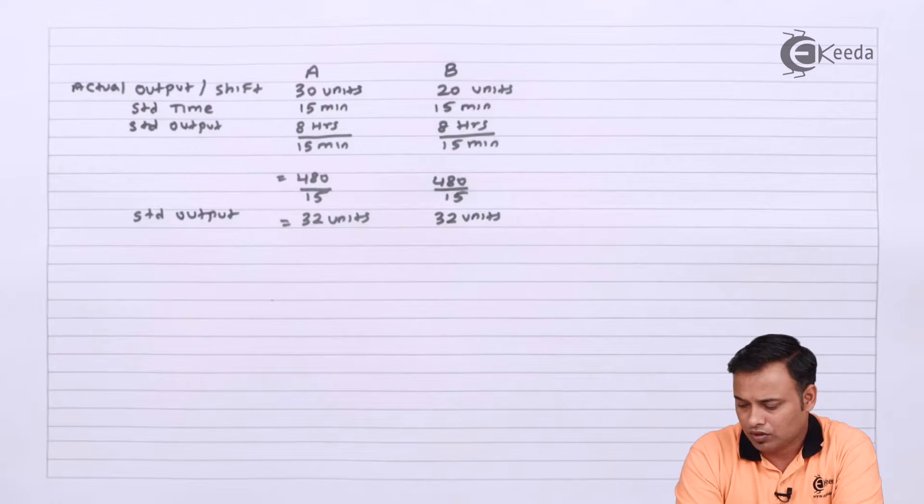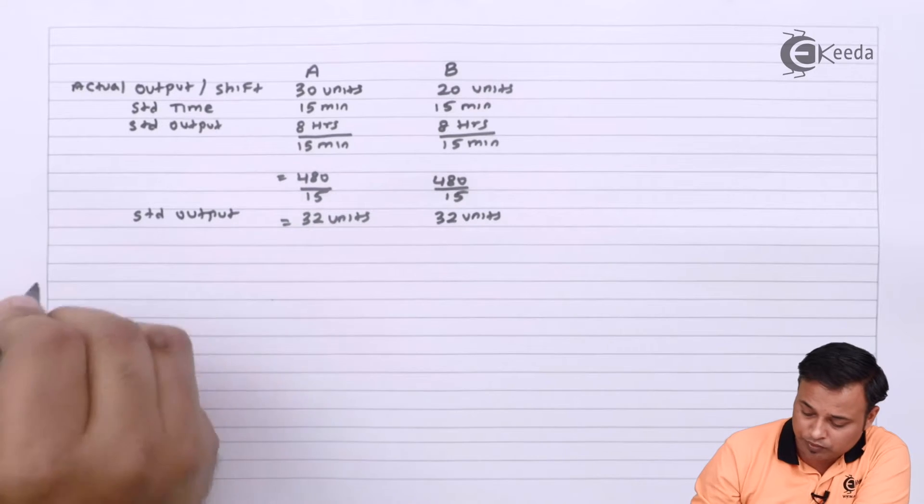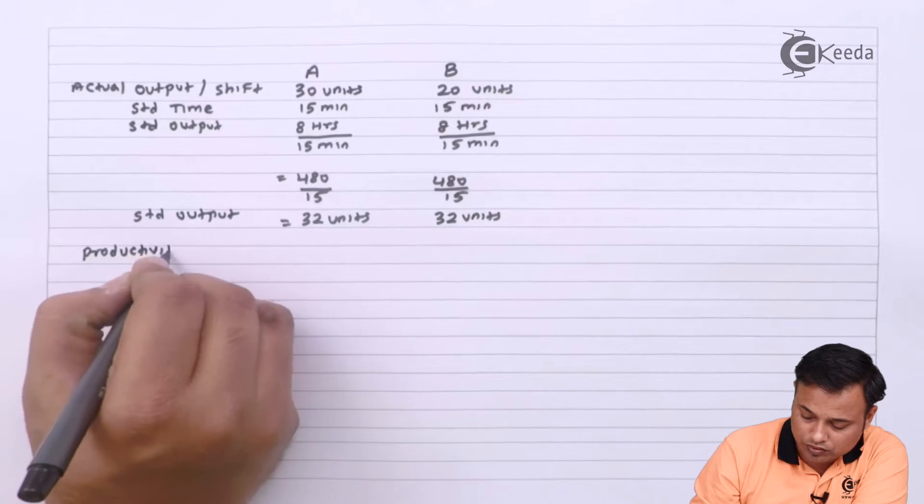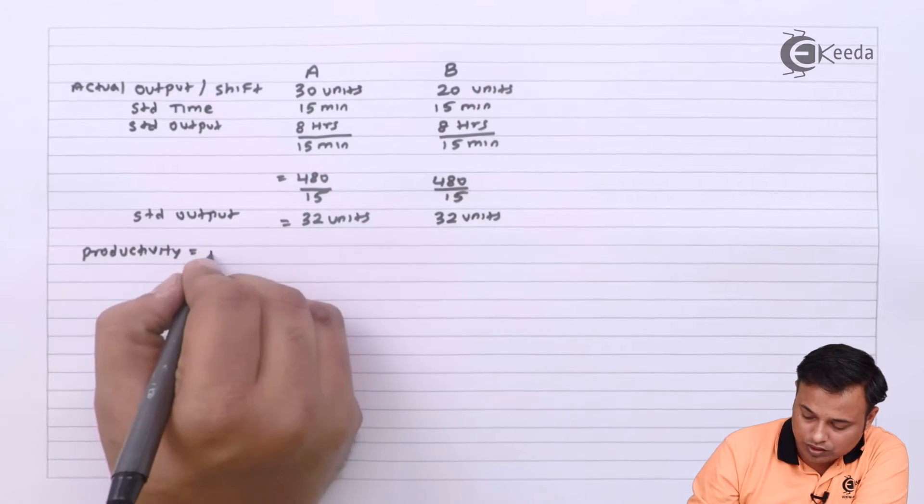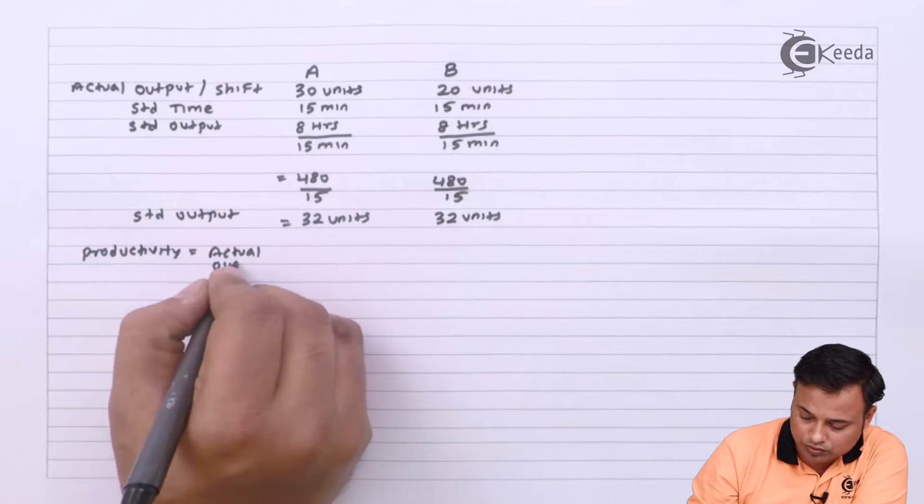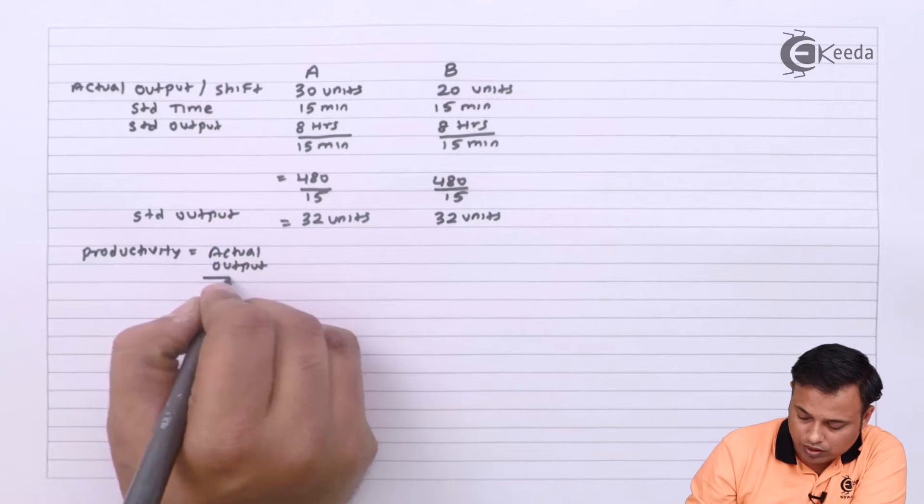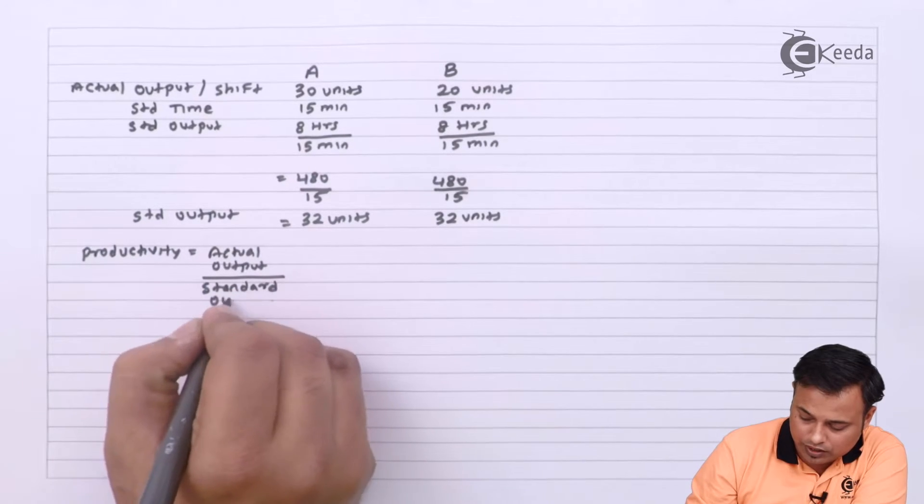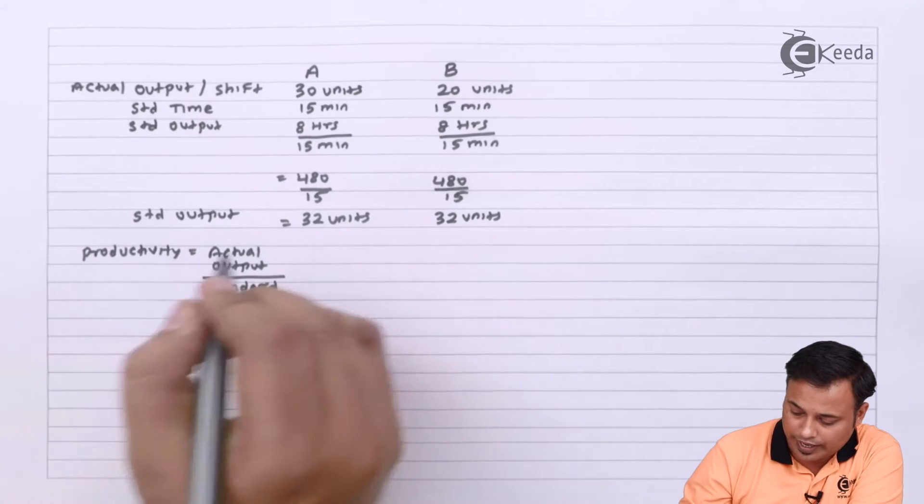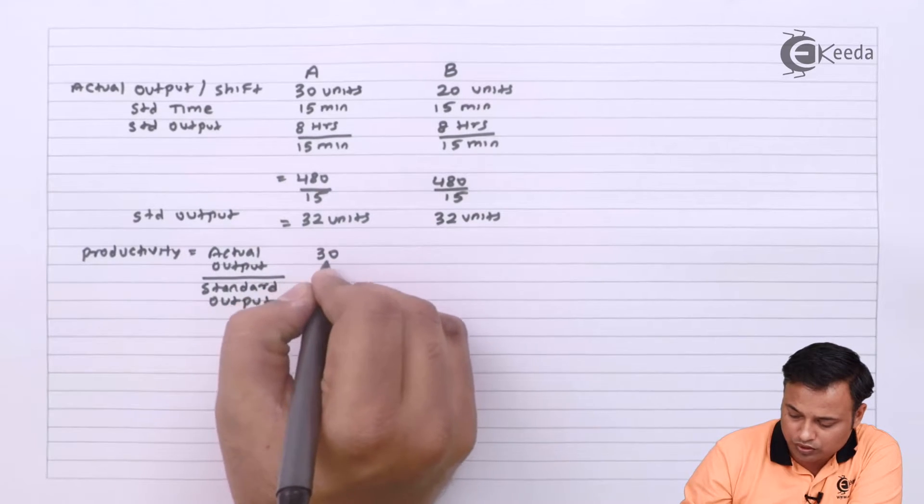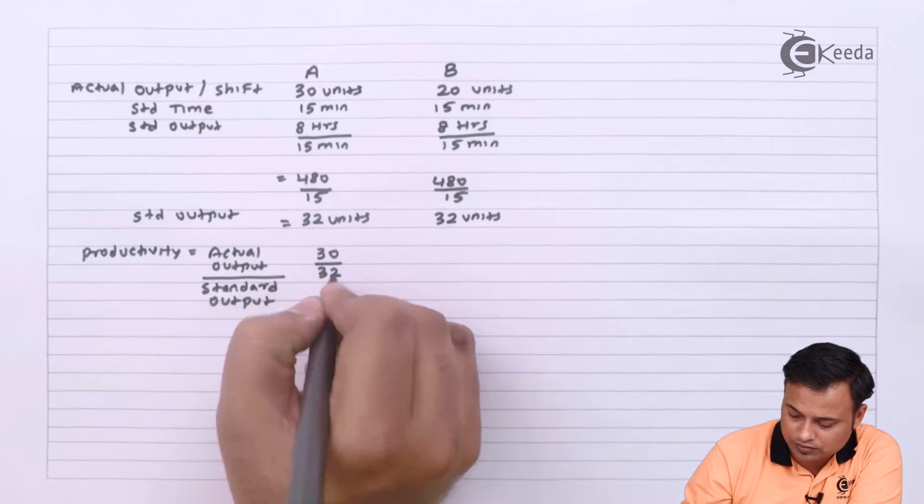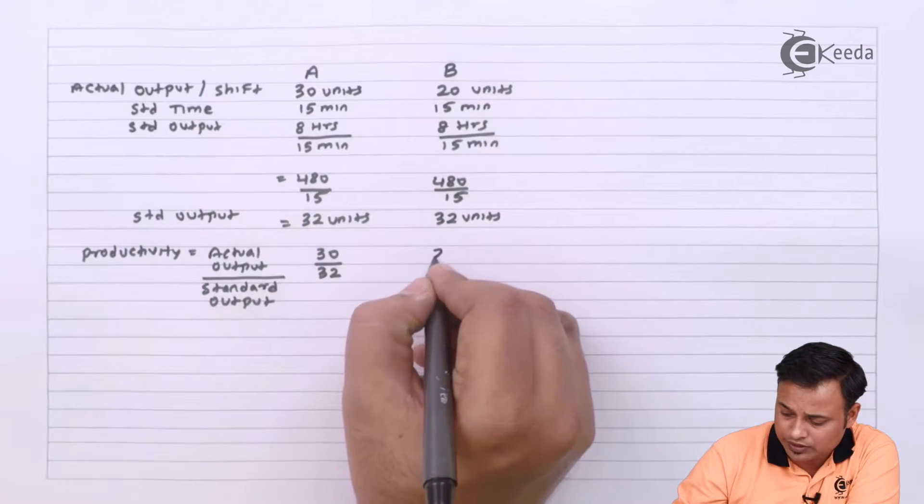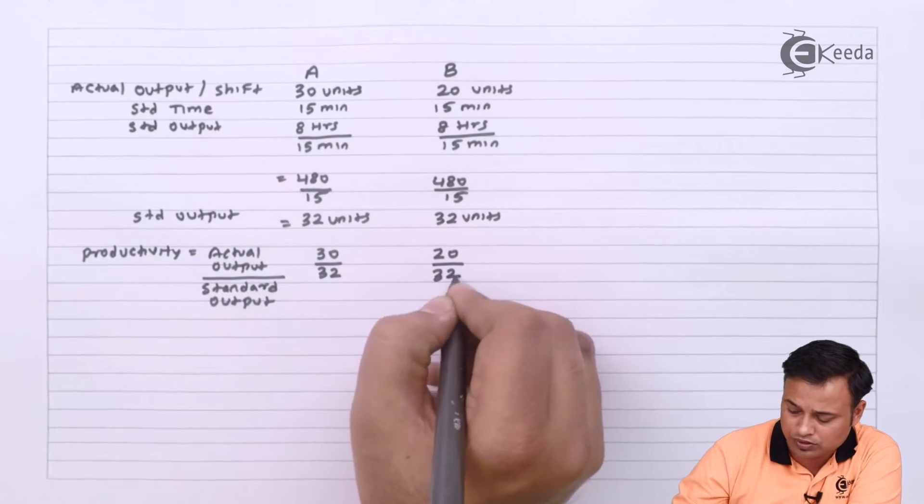So how can I calculate the productivity now? Productivity will be equal to actual output upon standard output. Your actual output is 30 divided by standard output is 32. In second case your actual output is 20 divided by standard output is 32.